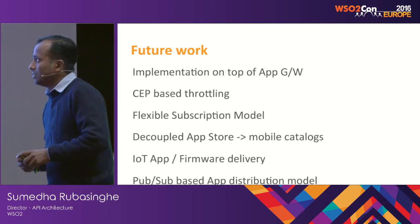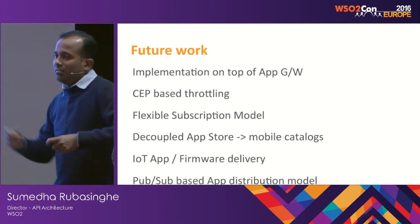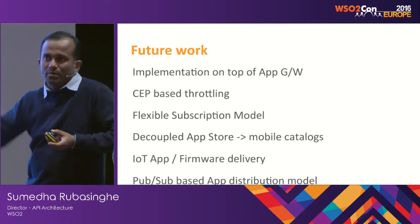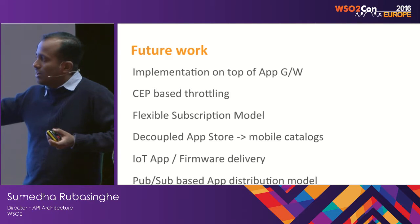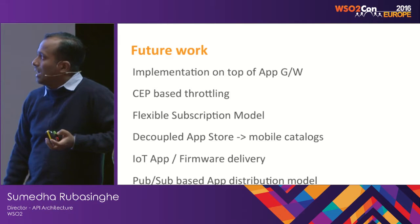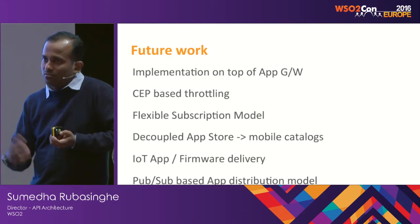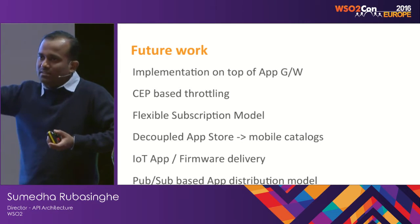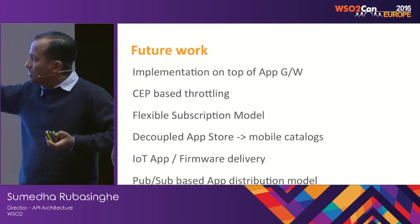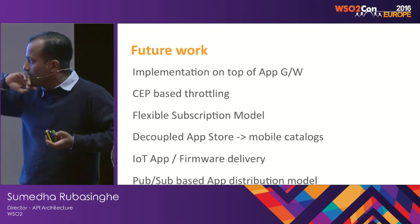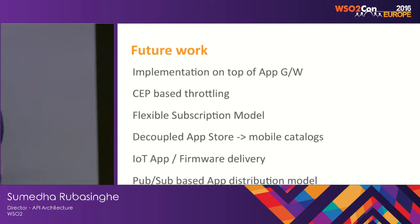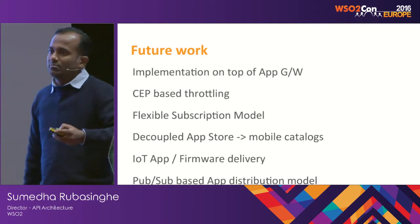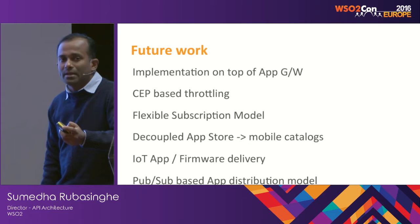Some future work we're doing: we're developing a common gateway for all WSO2 products, and we're trying to move the application gateway into that particular gateway. There's also CEP-based throttling for application access, already done for API Manager and being applied here. We're also making the subscription model non-mandatory, and applying the same concept to our IoT server so that IoT application or firmware delivery can be managed through this.